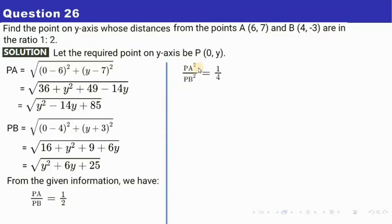So squaring both sides we have PA² by PB² equals to 1²/2², so 1 square is 1, 2 square is 4. So squaring here we will get rid of square root sign. So instead of PA² I am writing y² - 14y + 85 and similarly instead of PB² I am going to write y² + 6y + 25.